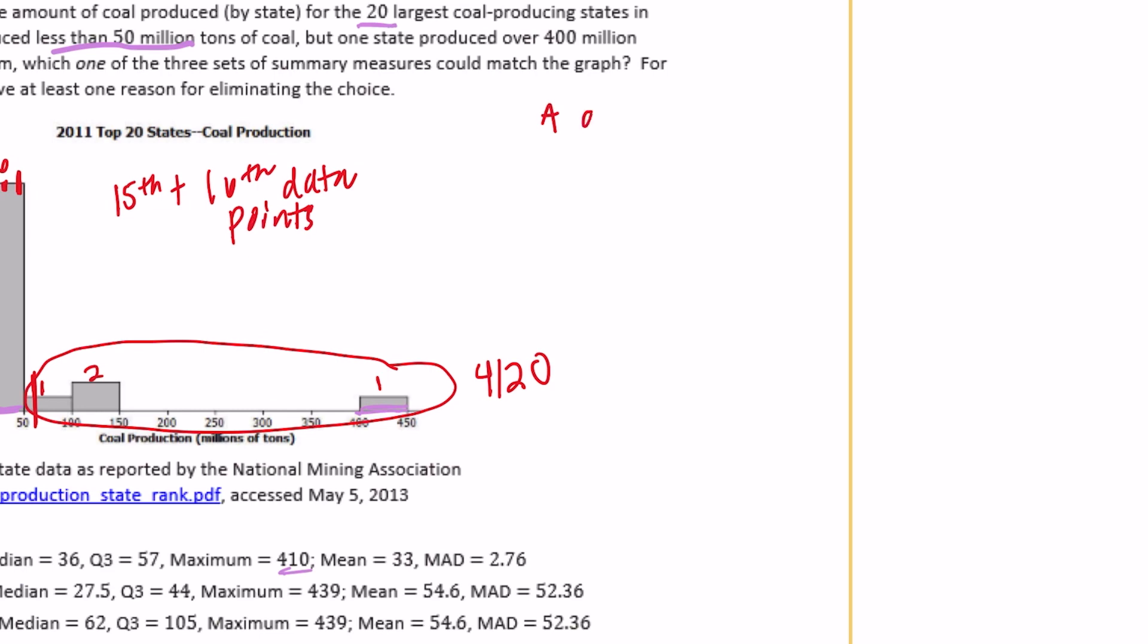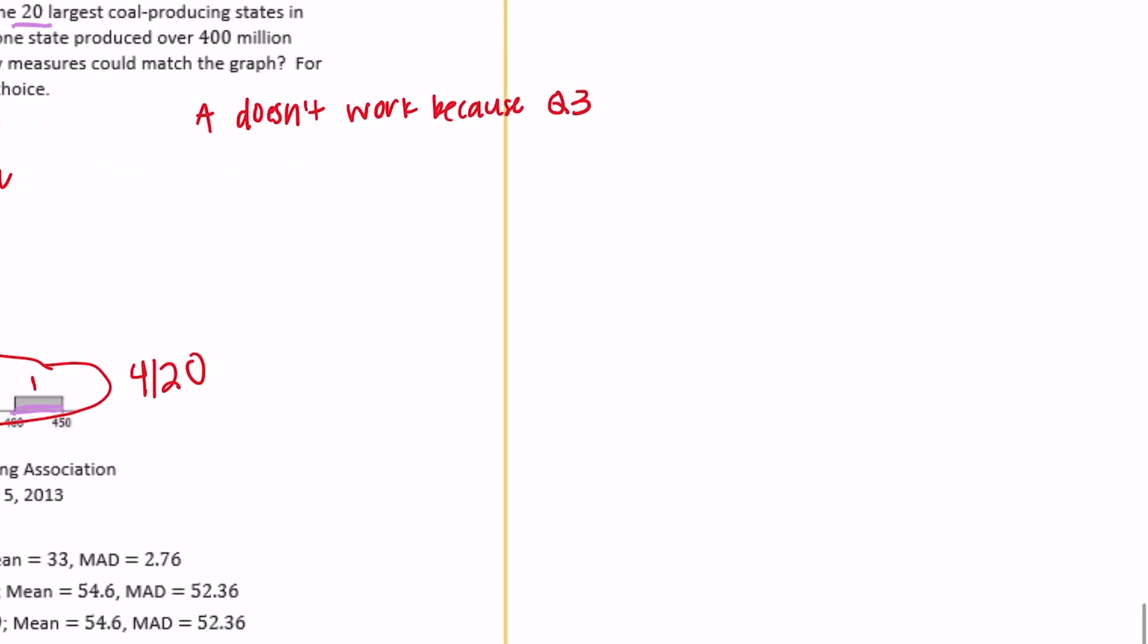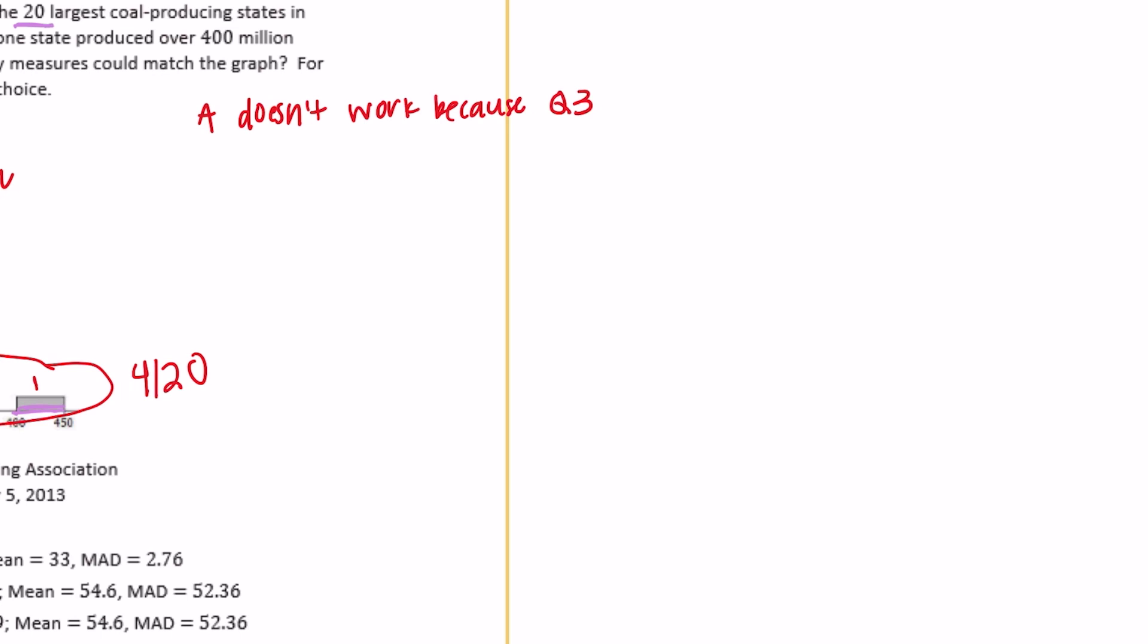A doesn't work because quartile three must be less than 50 since both the 15th and 16th ordered observations or data points are less than 50.